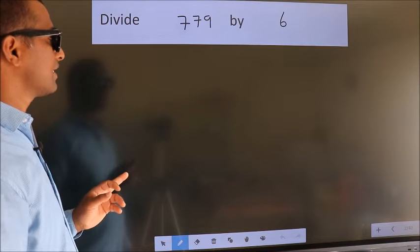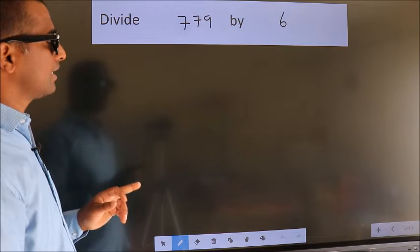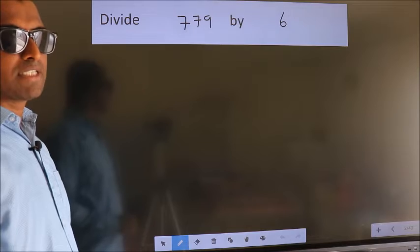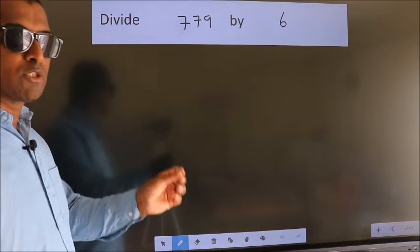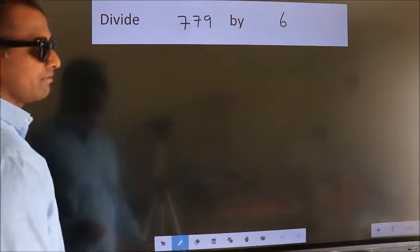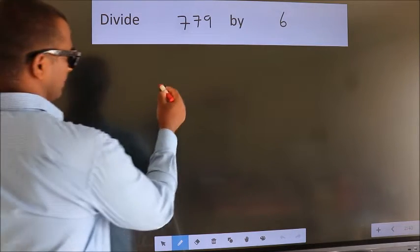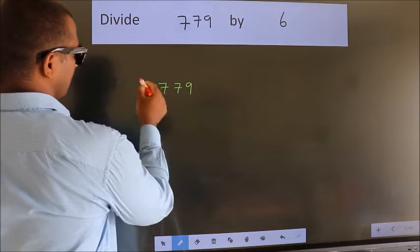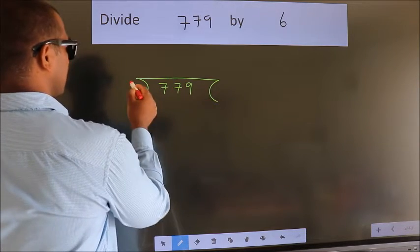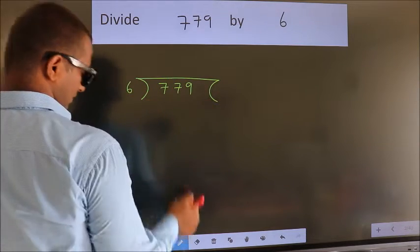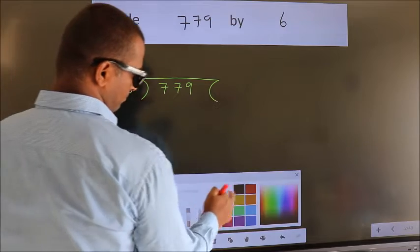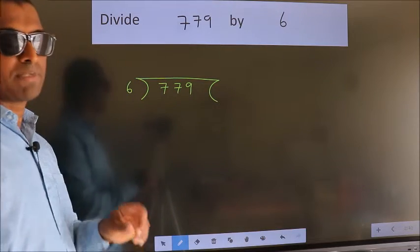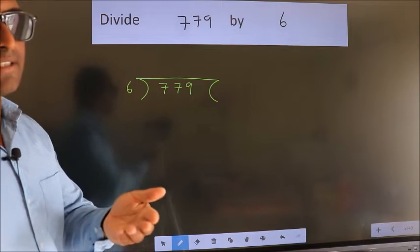Divide 7.79 by 6. To do this division, we should frame it in this way: 7.79 here, 6 here. This is your step 1.